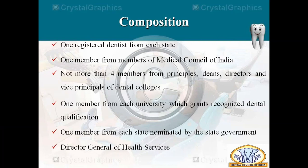Let's see the composition and how members are selected into the DCI. Members are selected from various categories of dentists, and each category has a separate election process. Ultimately all members are selected to the General Council. The first category is one registered dentist from each state — around 29 dentists in total, one from each state. The second category is one member from the Medical Council of India. The third category is four people selected from principals, deans, directors, and vice principals of dental colleges across India.